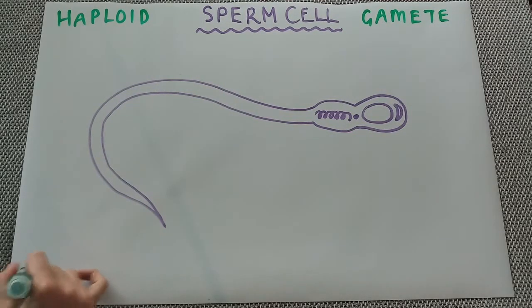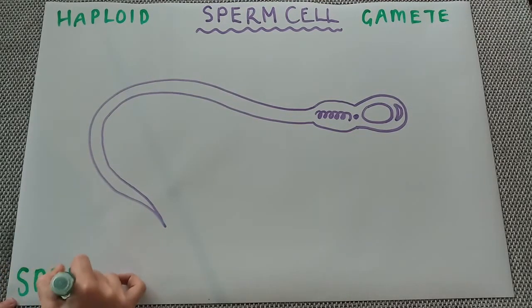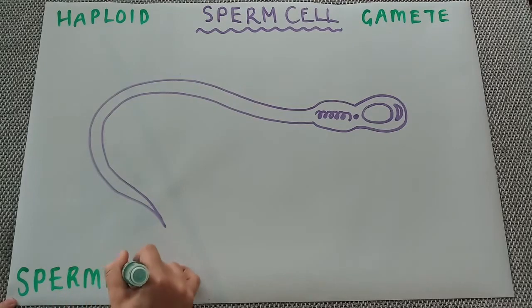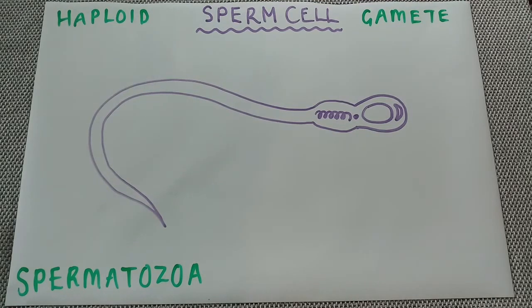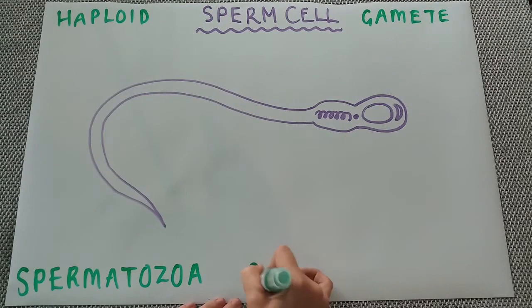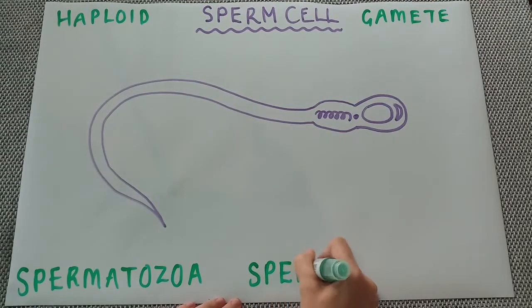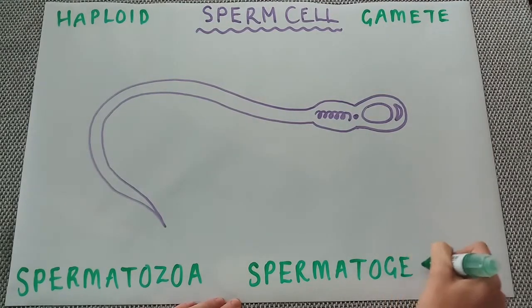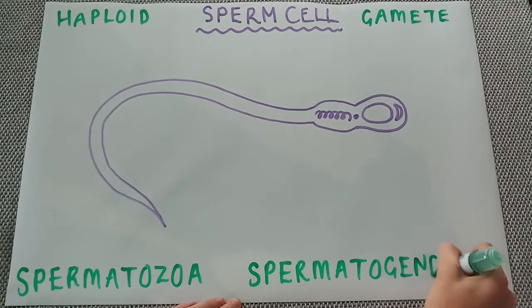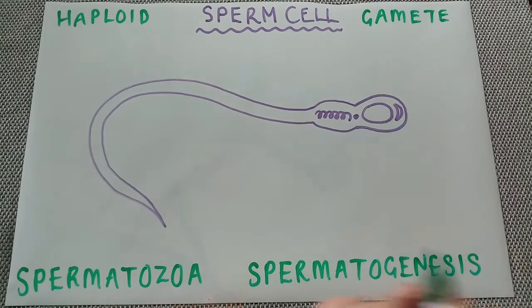The scientific full name for a sperm is spermatozoa, though we're going to continue calling it sperm. It is formed in a process called spermatogenesis, which happens inside the male testes — a process we will go through in a video at a later date.